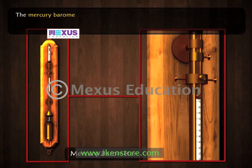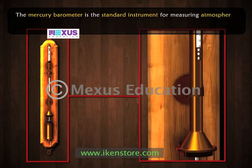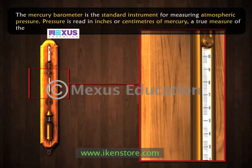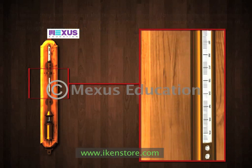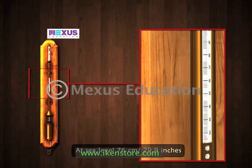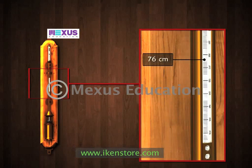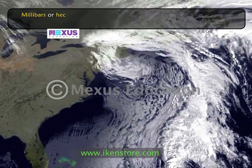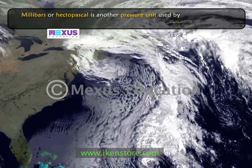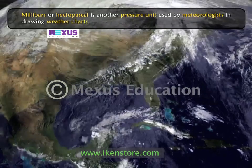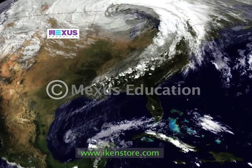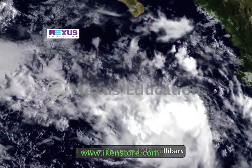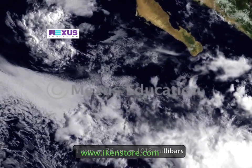The mercury barometer is a standard instrument for measuring atmospheric pressure. Pressure is read in inches or centimeters of mercury, a true measure of the height of the mercury column. Standard sea level pressure is 29.92 inches or 76 centimeters on the scale. Another pressure unit used by meteorologists in drawing weather charts is millibars or hectopascals. One bar is divided into 1000 millibars. One atmospheric pressure is 76 centimeters of mercury, that is 1013 millibars.